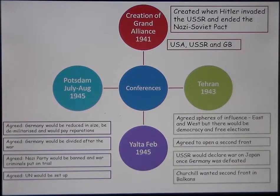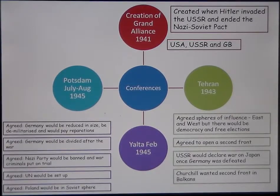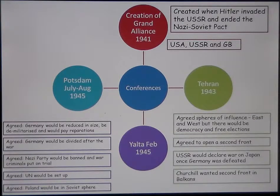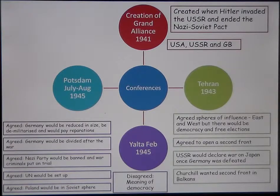The same three men attended — Churchill, Stalin and Roosevelt — and again Roosevelt and Stalin got on reasonably well while Churchill remained wary of Stalin. They agreed that Poland would be in the Soviet sphere, as a buffer state lying between Germany and the USSR. A key disagreement was the meaning of democracy: according to Stalin, democracy meant electing the Communist Party to best represent the working classes, whereas that was not what Britain and America meant, and there were already issues with how Poland was being governed.